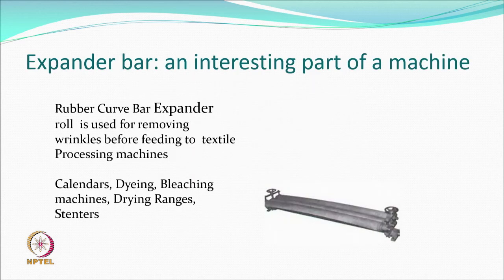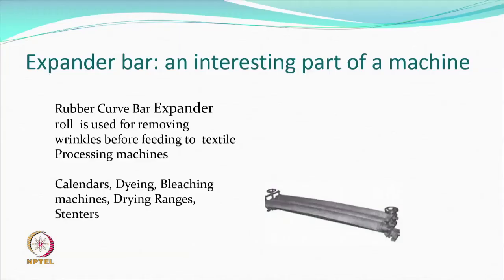Every processing machine may have something called an expander bar. The fabric first passes over the expander bar so that it is stressed in the width direction to remove any creases before feeding into the machine. This is part of the feeding system of every machine — including cylinder dryers and stenters. The fabric must go in open-width form; folded fabric going over a cylinder is not acceptable.